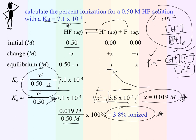Just make sure you're writing out your dissociation steps appropriately, writing out correct equilibrium expressions, and always checking your approximation method to be sure that it's under 5%.